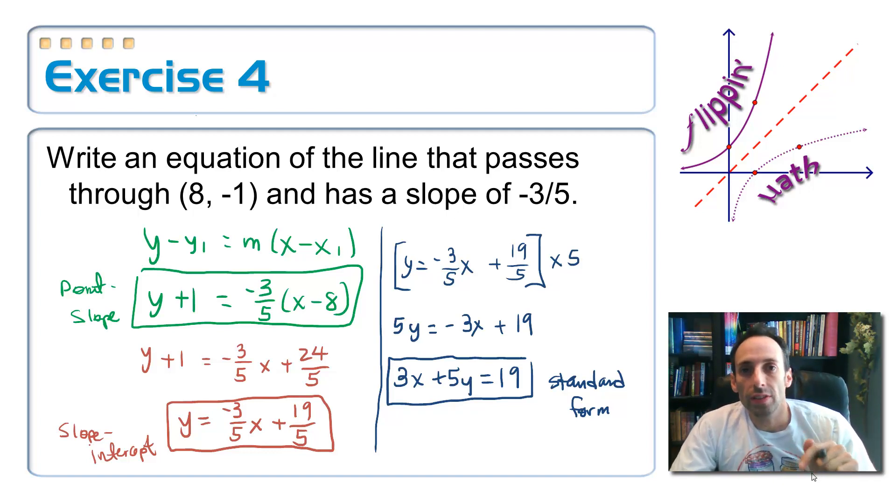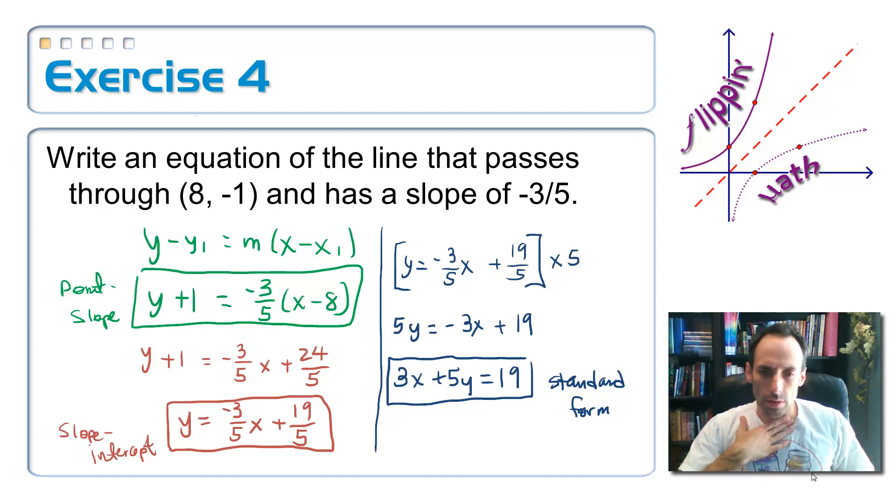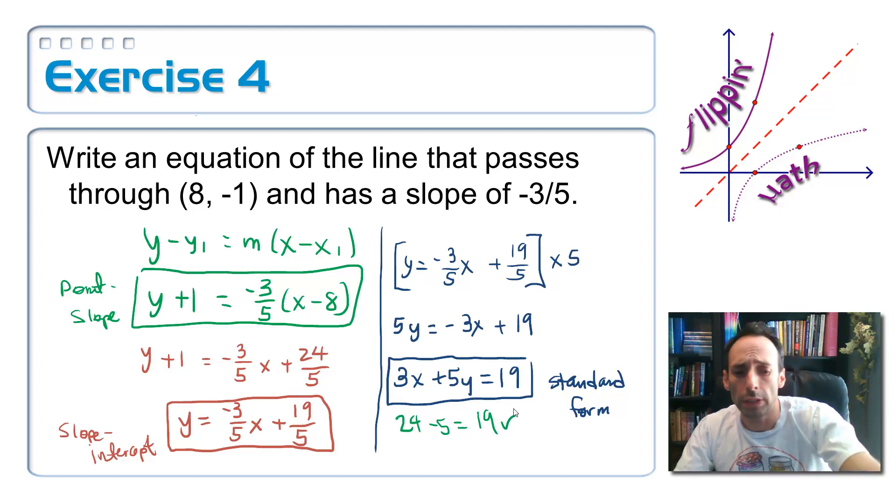And then get the x and the y onto the left-hand side. We get three x plus five y equals nineteen. Now notice that in the standard form, it makes it very easy for you to check to see if you have the right answer. All you've got to do is plug in your two points there, the eight negative one. So three times eight, that would be twenty-four, and five times negative one, minus five, twenty-four minus five. Definitely nineteen checks out. You know you did it right.